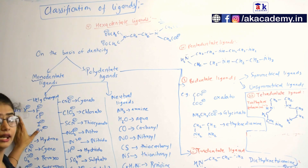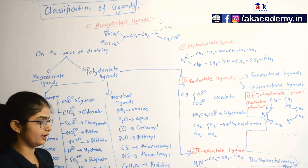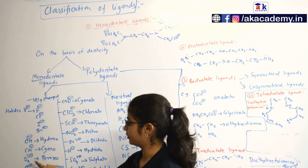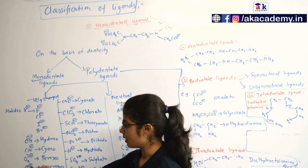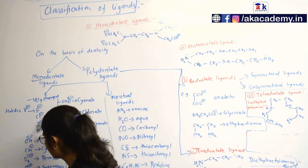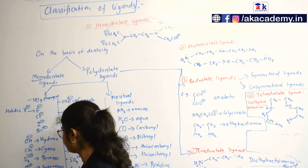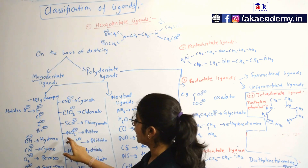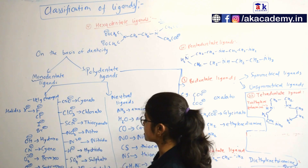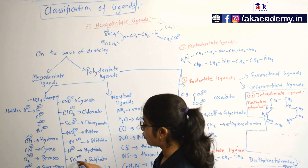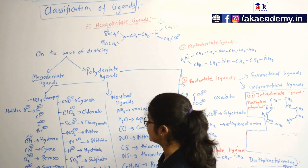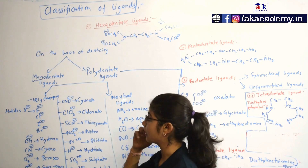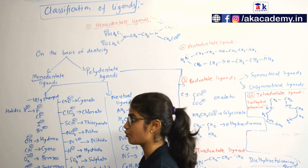Under negatively charged ligands, we have the halides — fluoride, chloride, iodide, bromide — then hydroxo, cyano, peroxo (O2 2−), superoxo (O2−), and oxo (O2−). Then CNO− is cyanato, ClO3− is chlorato, SCN− is thiocyanato, NO2− is nitro, N3− is nitrido, H− is hydrido, SO3 2− is sulfato, and CO3 2− is carbonato. These are some very important monodentate ligands that we will use when discussing IUPAC naming of coordination compounds.